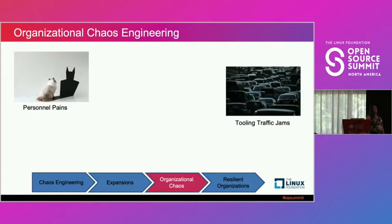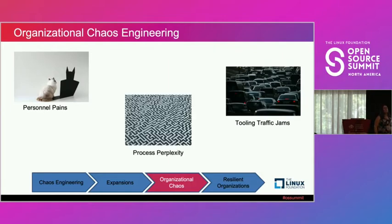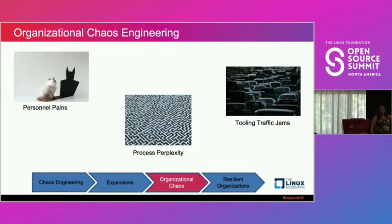An organization is really built up of three key elements: your people, your tooling, and your processes. If you have all three in place and correctly designed, you'll have a resilient organization. But if any one of those three is brittle in any way, your organization is not going to be very resilient. We're going to look at each of those independently for chaos experiment ideas you can run on them.